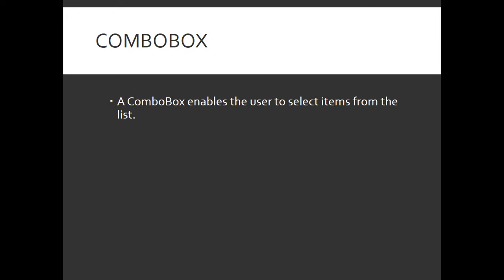The last control we are going to see is a ComboBox. A ComboBox is a control which enables the user to select items from a list. In that case we can use a ComboBox.